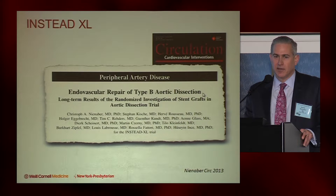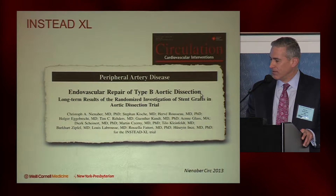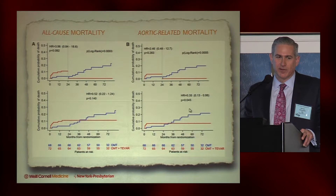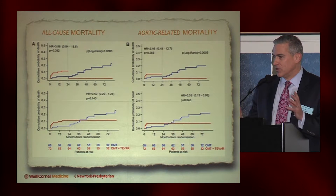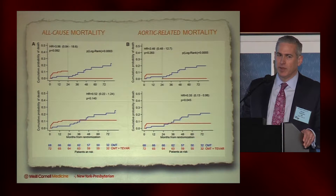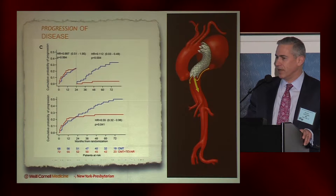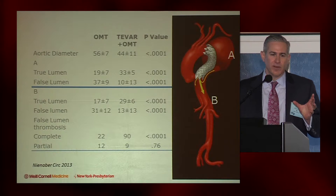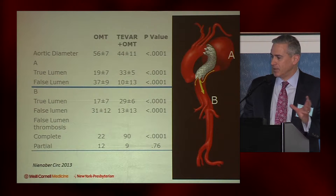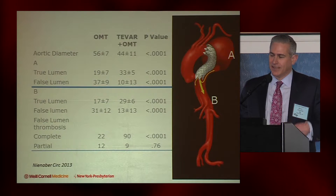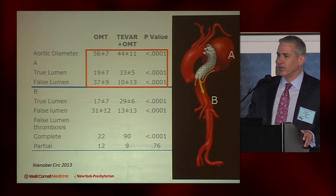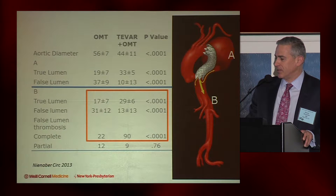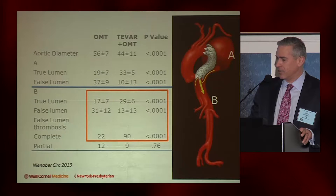They tried to look at this in the INSTEAD XL study, published a few years after the original paper. There are certainly some flaws — they used landmark analysis. But looking at data out to five years, there may actually be benefit from TVAR in terms of reduction in all-cause mortality, aortic-related mortality, and prevention of progressive aortic enlargement. Looking at aortic remodeling specifically, there is benefit in the proximal segment covered with the stent graft — increasing true lumen gain and decreasing false lumen size — and also statistically significant benefit in the more distal descending thoracic aorta.